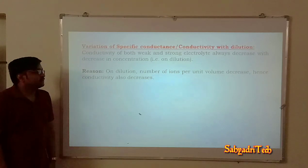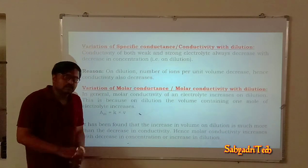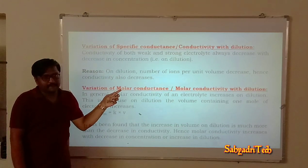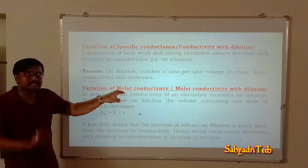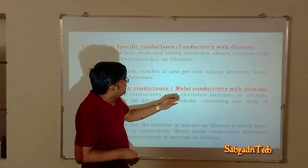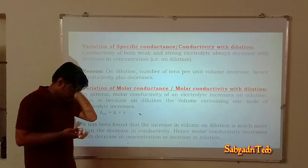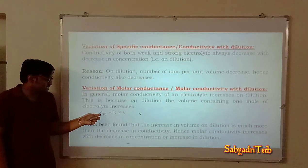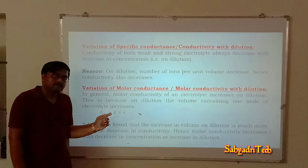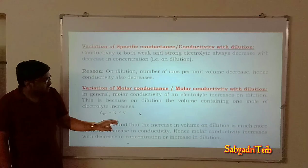Coming to the variation of molar conductance — or molar conductivity — with the dilution. Both are different: specific conductance κ (kappa) and molar conductance λm. Now we look at the variation of λm, that is molar conductance. In general, molar conductivity of an electrolyte increases on dilution. When you look at the relation, λm = κ·V — molar conductivity equals the product of conductivity and volume of solution.